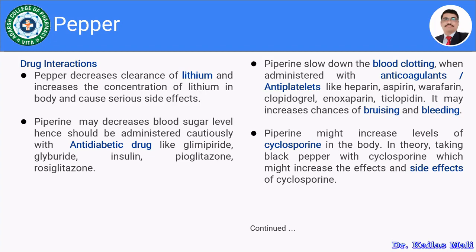Examples of anti-diabetic drugs to avoid combining with pepper include glimepiride, glyburide, insulin, pioglitazone, and rosiglitazone. Pepper or piperine also slows down blood clotting. Certain anti-coagulants or anti-platelet drugs like heparin, aspirin, warfarin, clopidogrel, enoxaparin, and ticlopidine — when combining pepper with these drugs, there are chances of increased risk of bruising and bleeding. One should not combine pepper or piperine with anti-coagulants and anti-platelet drugs.